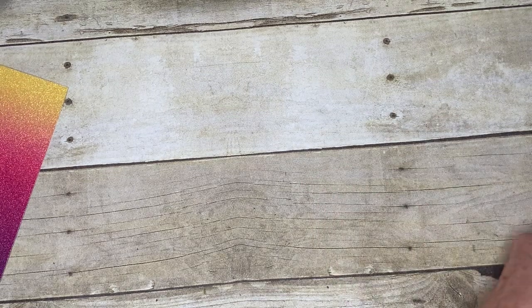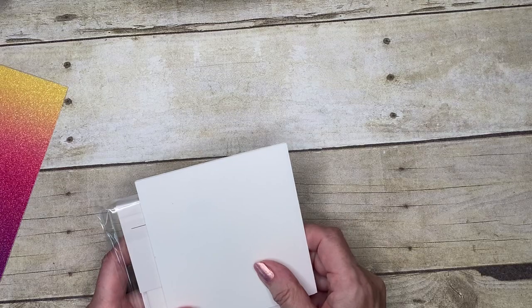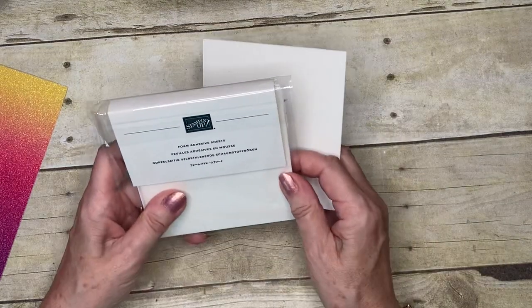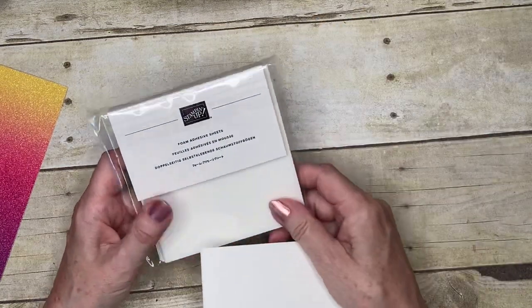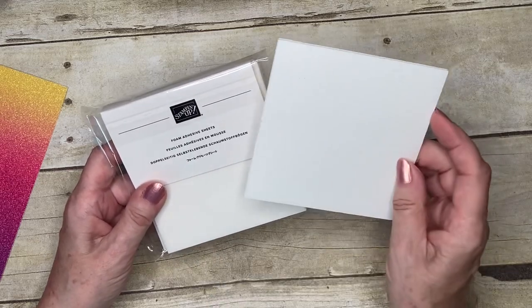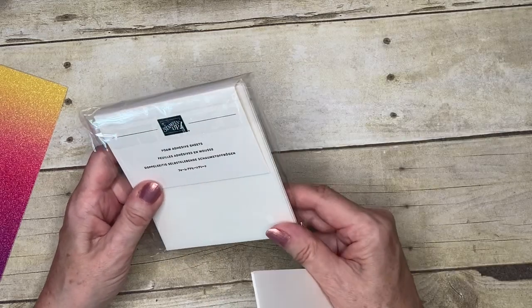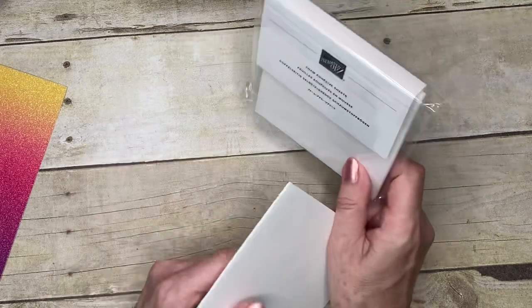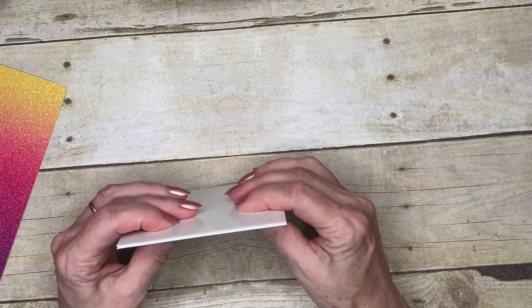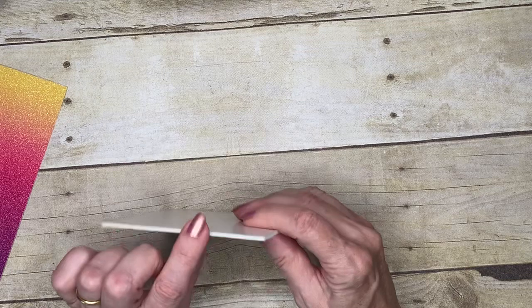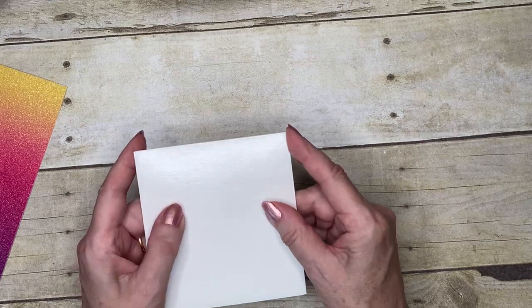And then our third that I'm going to show you that all work together are the foam adhesive sheets. And you get a packet, I think, six by six, and there's six in a packet. And these are nice thick foam pads that are double-sided adhesive.